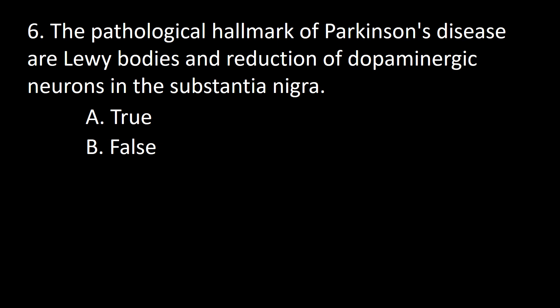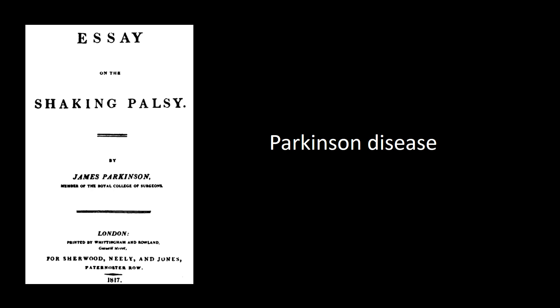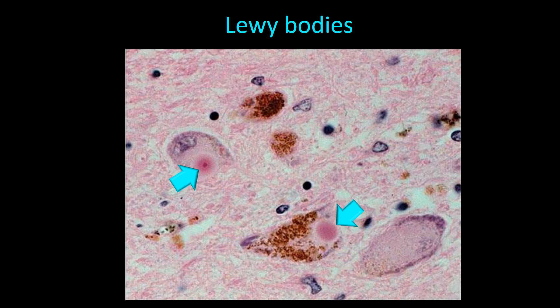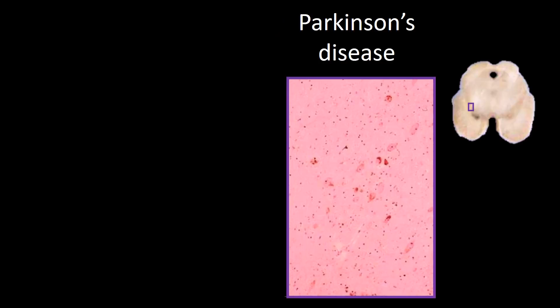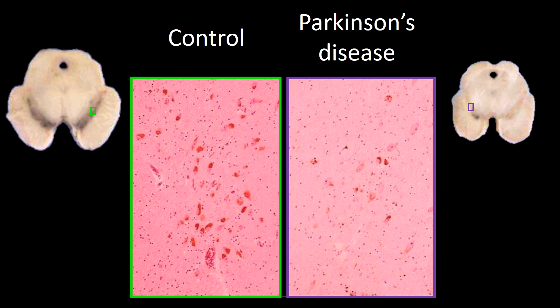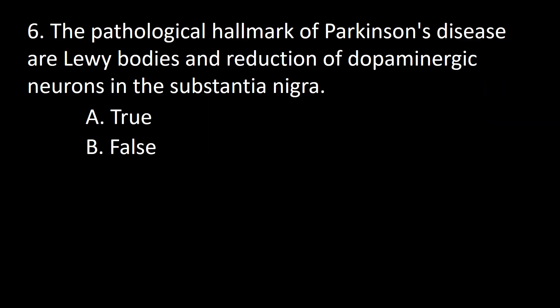Next question: The pathological hallmarks of Parkinson's disease are Lewy bodies and reduction of dopamine neurons in the substantia nigra — A, true; B, false. The disease Parkinson described in 1817 is pathologically characterized by the presence of Lewy bodies in the substantia nigra, shown here in two melanized dopamine neurons. There is also a reduced number of cells in the substantia nigra pars compacta, especially when compared with a normal control. So the answer is true.